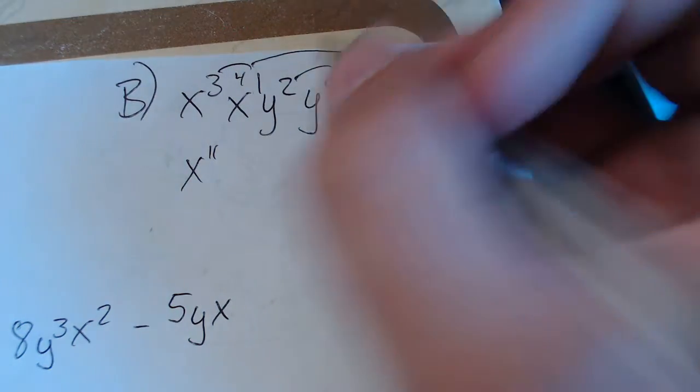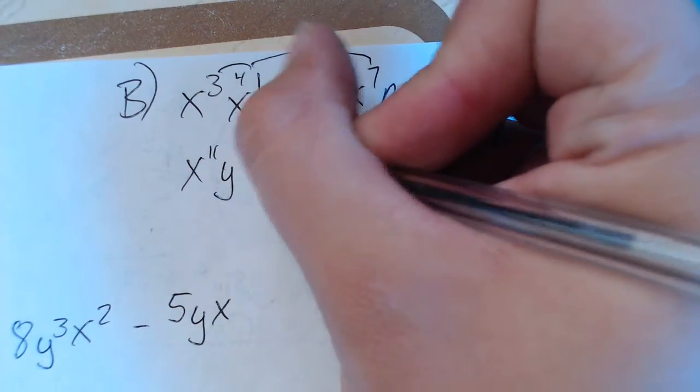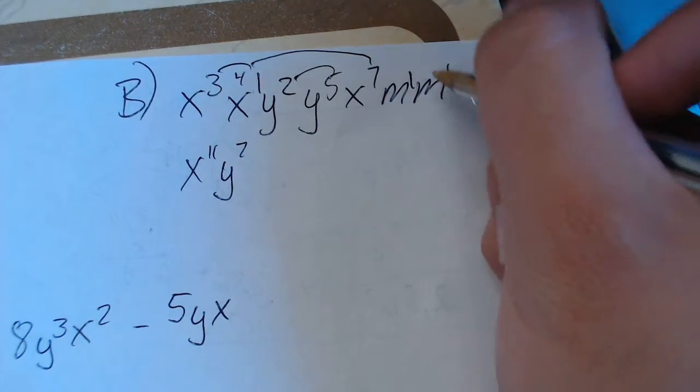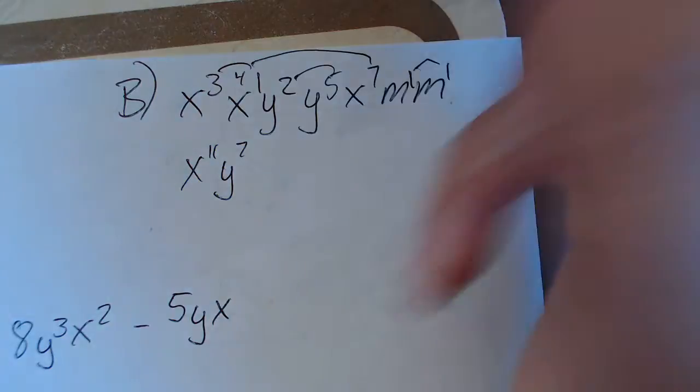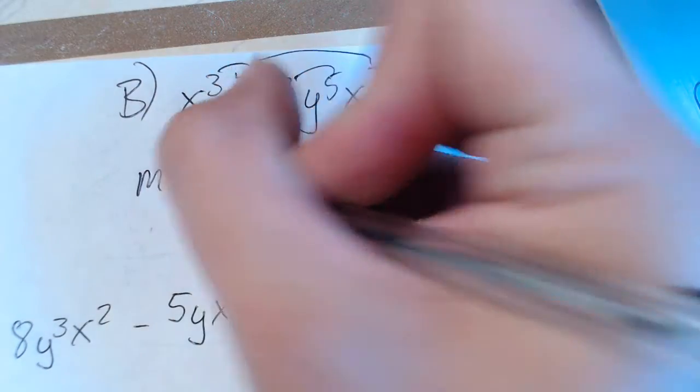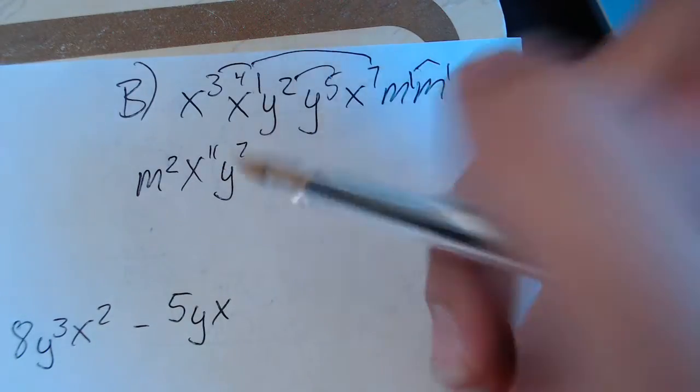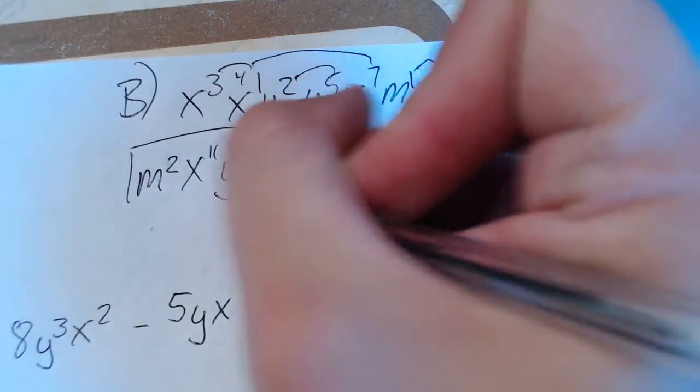Now let's go with the y's. 2 and 5 is 7, so we have x to 11, y to the power of 7. And then we've got these two m's on the end. Each one has an exponent of 1. 1 plus 1 is 2. So we'll go ahead and put m squared in the front to keep it in alphabetical order. Our final answer: m squared x to the power of 11, y to the power of 7. And it's that easy.